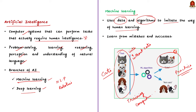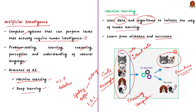It is like teaching computers to learn from experience, just like we learn from our mistakes and successes. Examples of machine learning are found in everyday applications like Spotify and Netflix, which use machine learning algorithms to recommend music or TV shows based on previous history. Self-driving cars are also examples of machine learning.